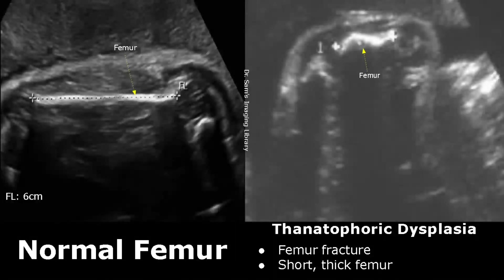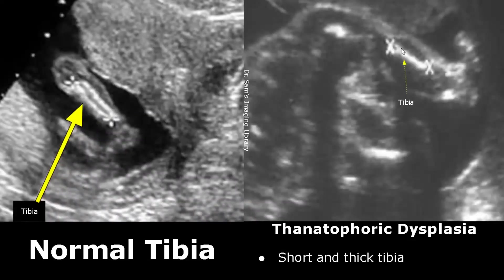Thanatophoric dysplasia is the most common lethal skeletal dysplasia. Fractures along with short and thick long bones are found. This is a short, thick femur with a fracture. This is an image of the tibia — it is shorter in length and thicker than usual. It is difficult to evaluate the tibia as compared to the femur.